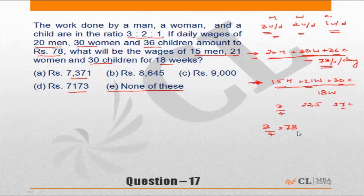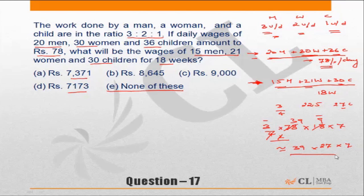For daily wages, three-fourths of 78 gives an approximate daily figure. For 18 weeks, multiply by 18 into 7. That gives approximately 39 into 9 into 3, equaling about 27 into 7. However, since the answer choices are close (71, 7c, and 77), this approximation is not reliable enough to select an answer, so we must solve more precisely.